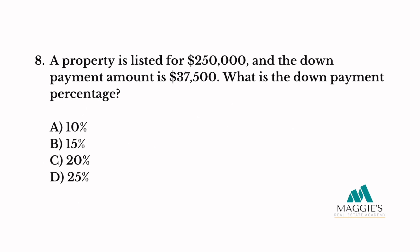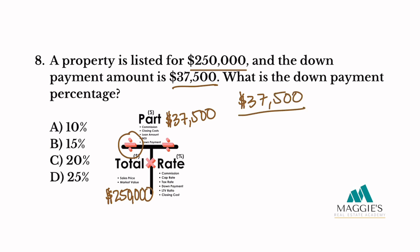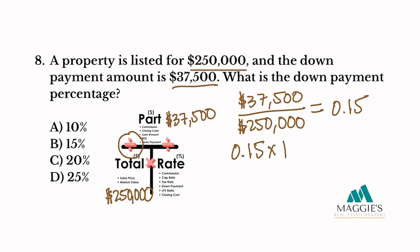Number eight. A property is listed for $250,000 and the down payment amount is $37,500. What is the down payment percentage? The property listed for $250,000 is my total and goes in the total column. The down payment amount of $37,500 goes on the top. Now all we have to do is divide then multiply by 100: $37,500 divided by $250,000 equals 0.15. Now remember to convert it to a percent by multiplying by 100: 0.15 times 100 gives me 15%. So my answer to this one is B.